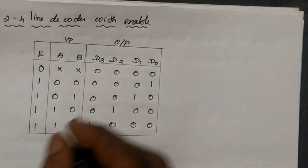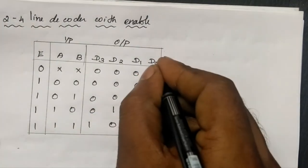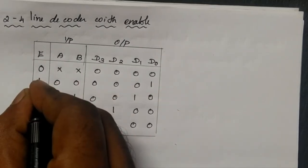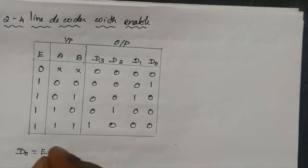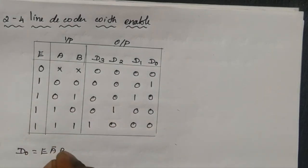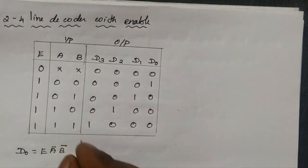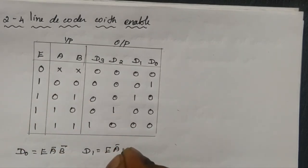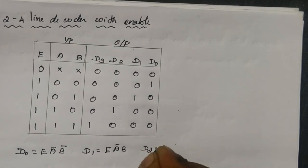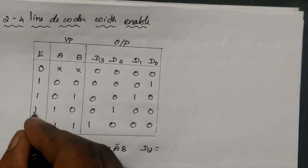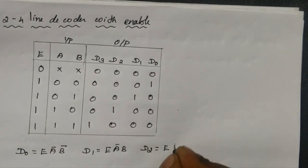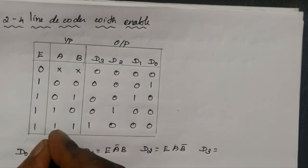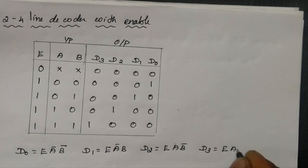Now we will go for the algebraic expression. For D0: D0 is equal to E · A-bar · B-bar. For D1: E · A-bar · B. For D2: E · A · B-bar. For D3: E · A · B.